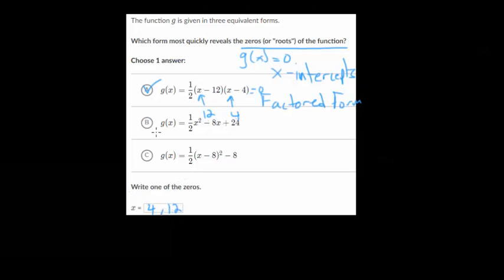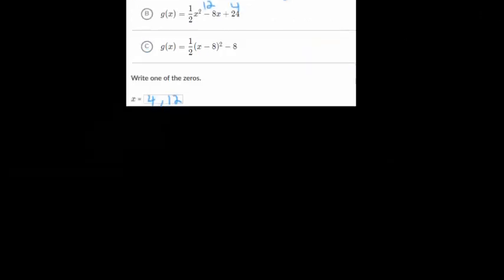Now if they wanted the y-intercept we'd use b because you just plug in zero and the y-intercept is at 24. And if they wanted the vertex we'd use c since the vertex is at 8 comma minus 8. So let's keep going with these.